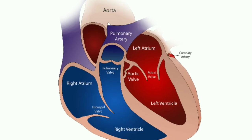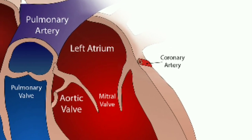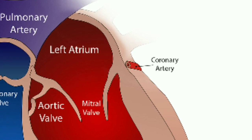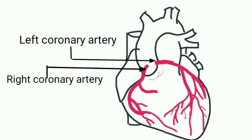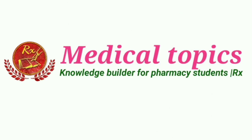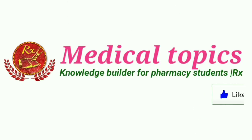Apart from all these vessels, there is another important vessel known as the coronary arteries. Coronary arteries play a significant role in supplying blood to the heart muscle. Like all other tissue in the body, the heart muscle needs oxygen-rich blood to function. The coronary arteries wrap around the outside of the heart, and their branches supply blood to all parts of the heart muscle.